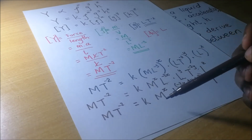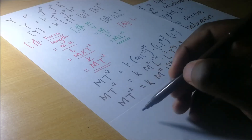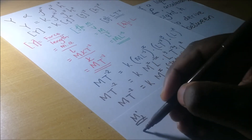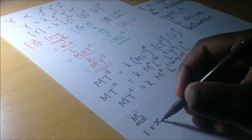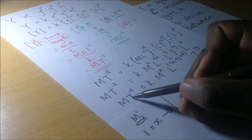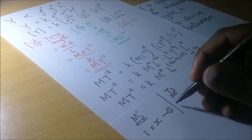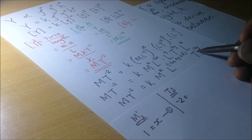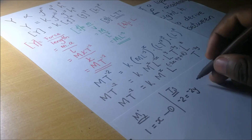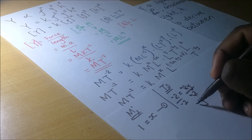Comparing powers of M on both sides: the left side has power 1, so 1 = X, giving us X = 1. Comparing powers of T: the left side has negative 2, so negative 2 = negative 2Y. Dividing both sides by negative 2 gives Y = 1.